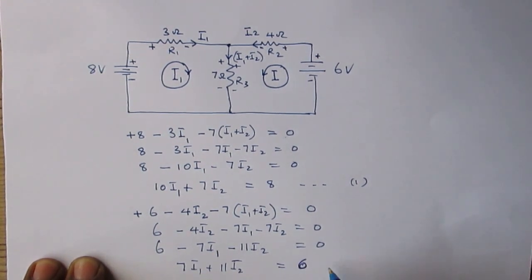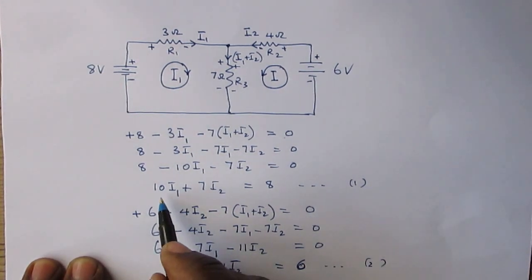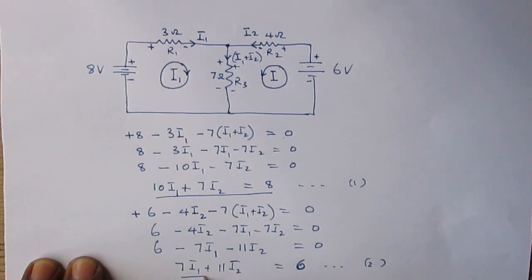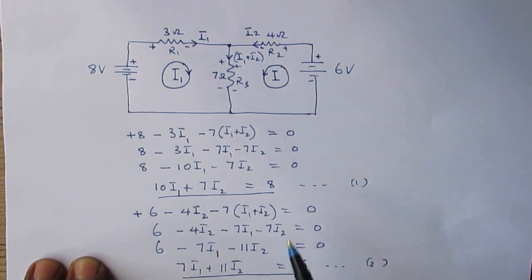We now have two simultaneous equations that we can use to solve for I1 and I2, and then I1 plus I2.